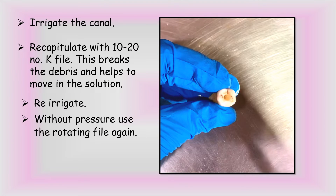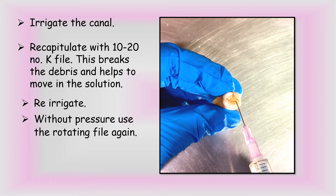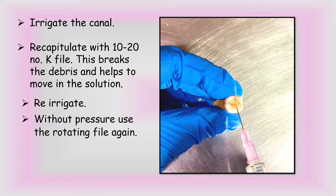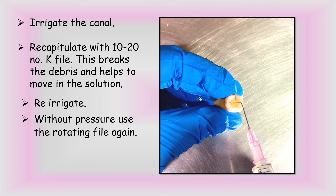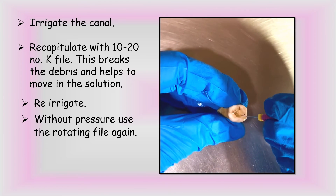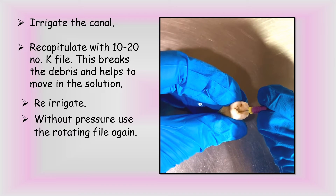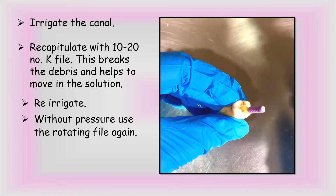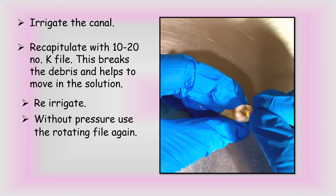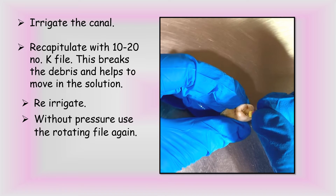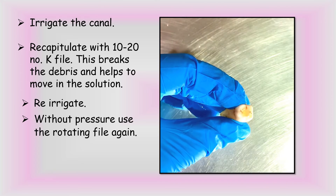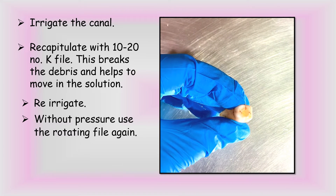After removing the file, you irrigate the canal. As seen in the video, we passively irrigate the canal. Once we have irrigated thoroughly, we recapitulate using a 10, 15, or 20 number K-file. This breaks up debris and helps move the irrigating solution further into the canal. After removing this file, we re-irrigate the canal and then use our rotary file again without pressure.